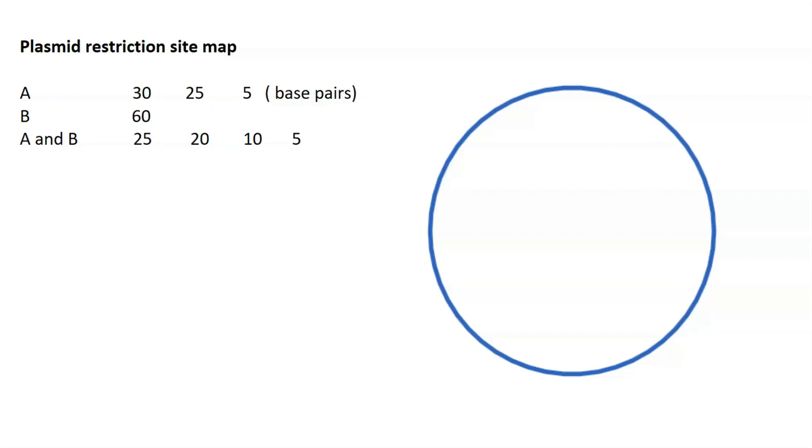Let's take a look at a simple example of how to map restriction sites on plasmid DNA. As you recall, a plasmid is a small circular DNA molecule that's usually found in bacteria and yeast cells.